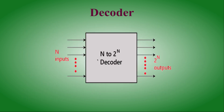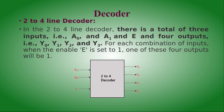Here is an example of the general structure of a decoder: n input lines produce 2^n output lines. For the two-to-four line decoder, there are two input lines and four output lines (2^2 = 4). E is the enable input. If E equals zero, it is in a disabled state; if E equals one, it is in the enabled state and will work.